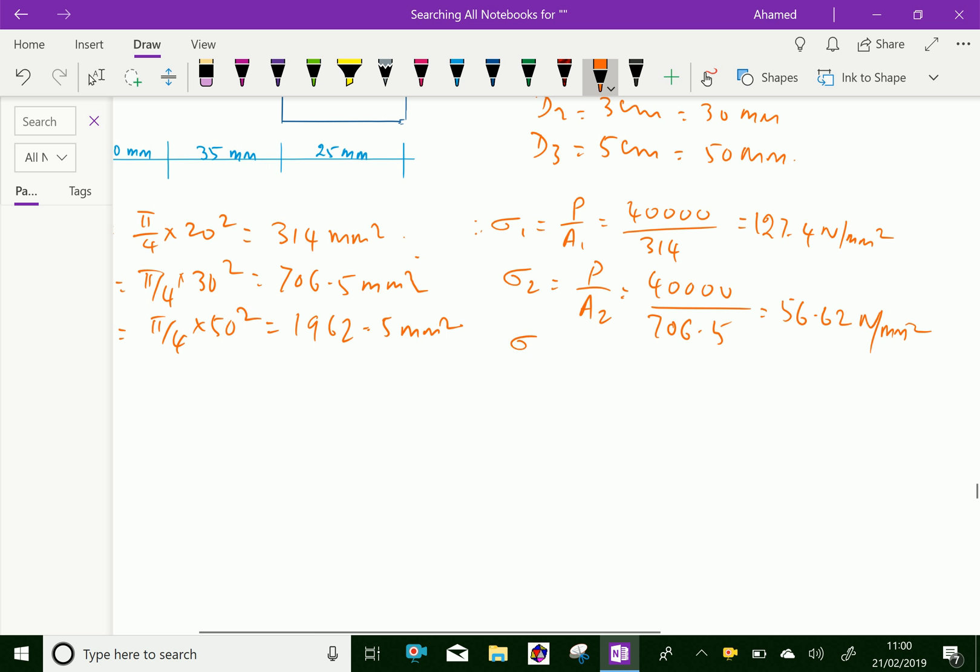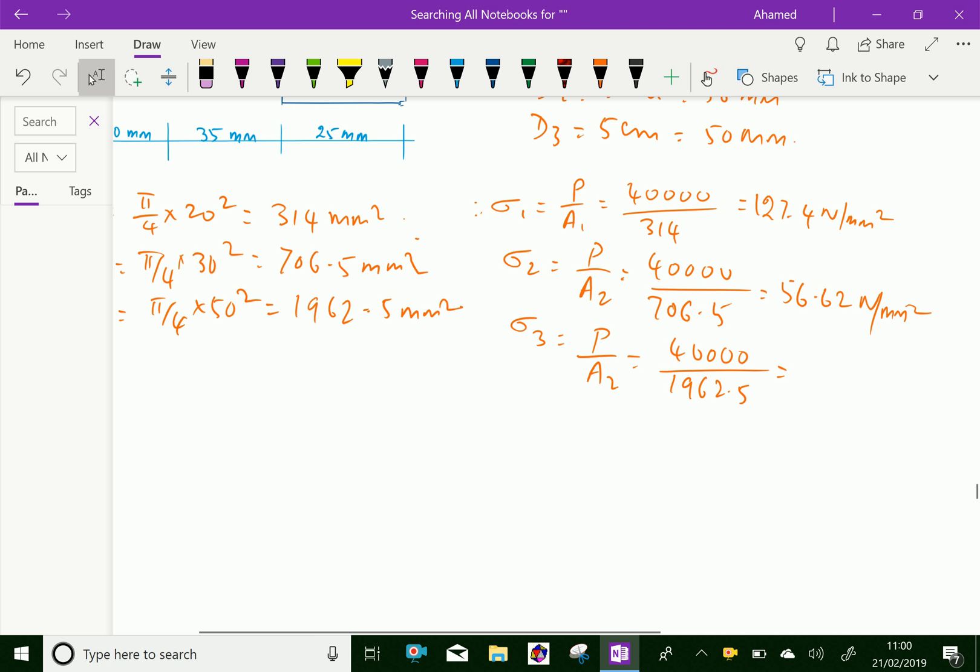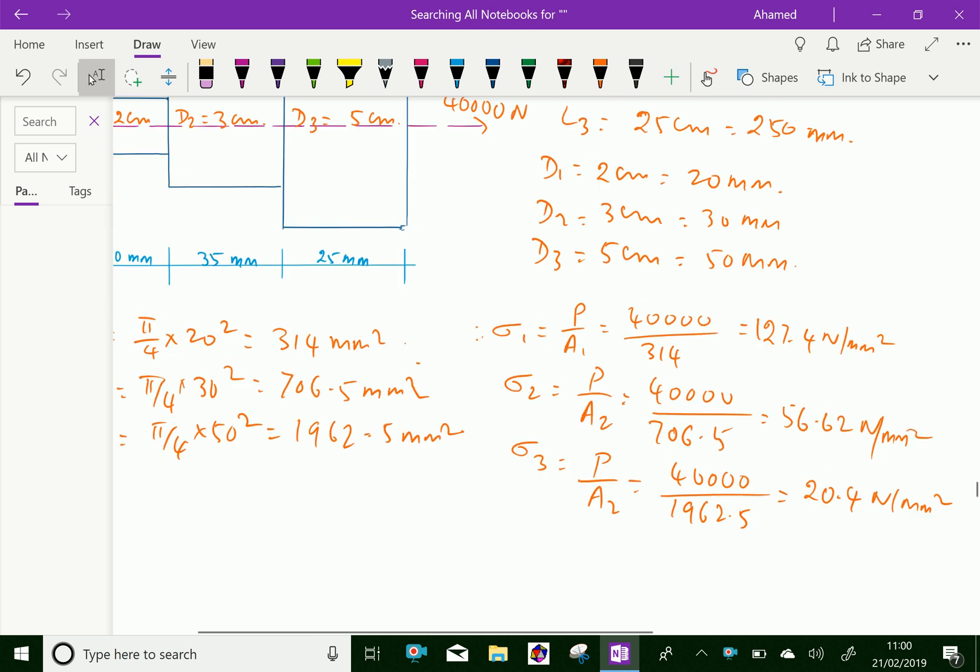Stress in third section, that is P by A3 equal 40,000 over 1962.5. 40,000 divided by 1962.5 equals 20.4 Newton per mm square.